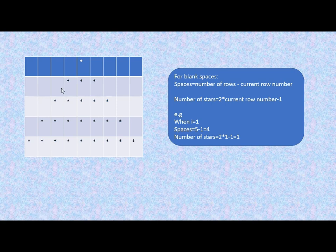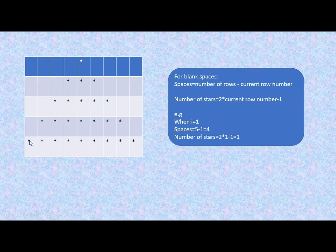When i equals two — that is, row number two — the number of blank spaces equals the total number of rows (five) minus the current row number (two), giving three blank spaces. Similarly, row three gives two spaces, row four gives one space. When i equals five, five minus five equals zero, so there is no blank space for the fifth row.